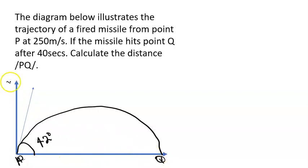And this is my y axis, this is my x axis. You observe that the missile was fired at 42 degrees to my x axis. The first thing that should come to your mind is to resolve the initial velocity.